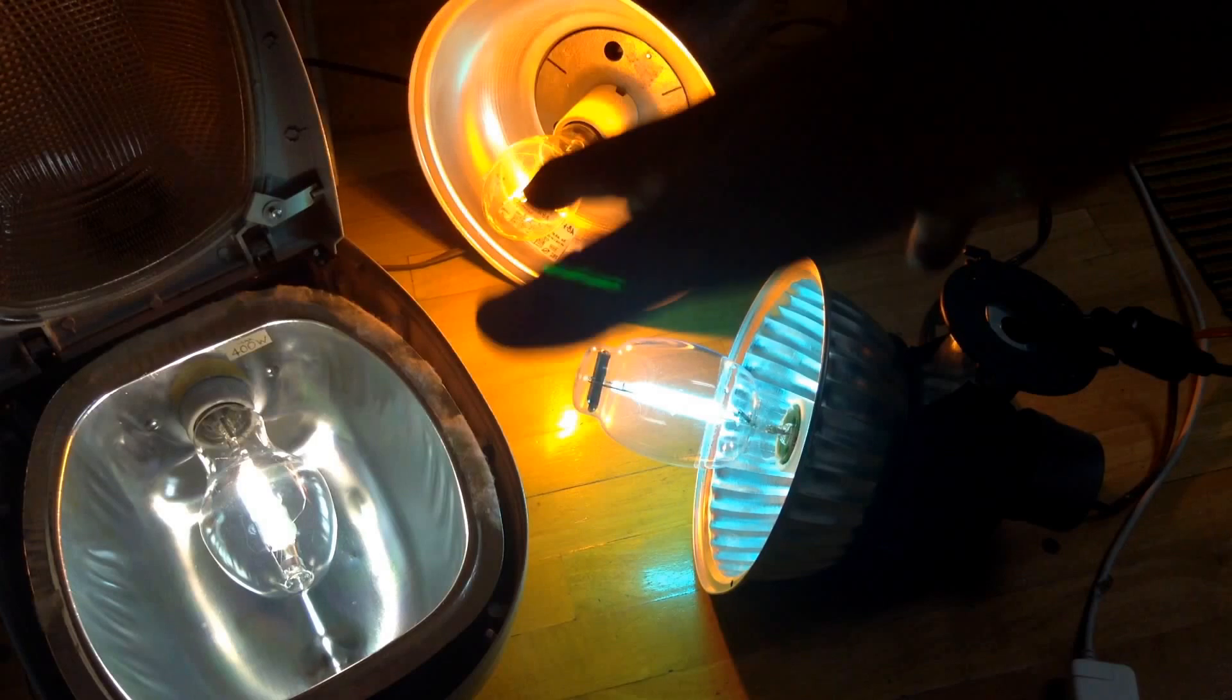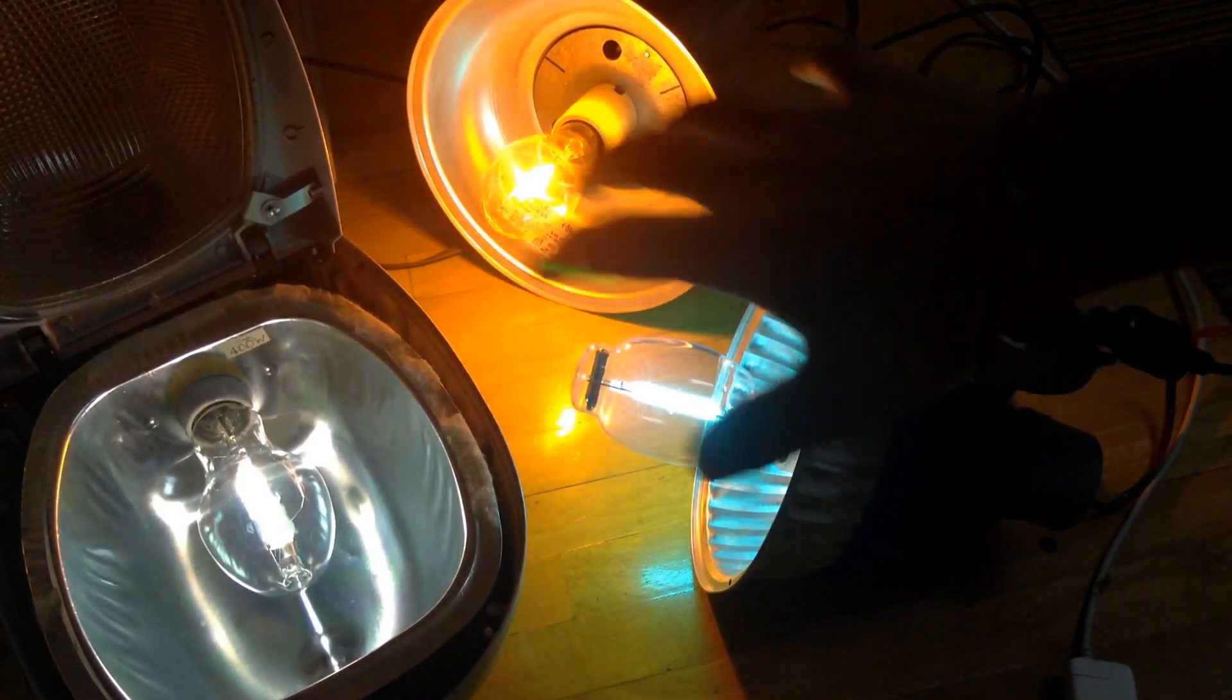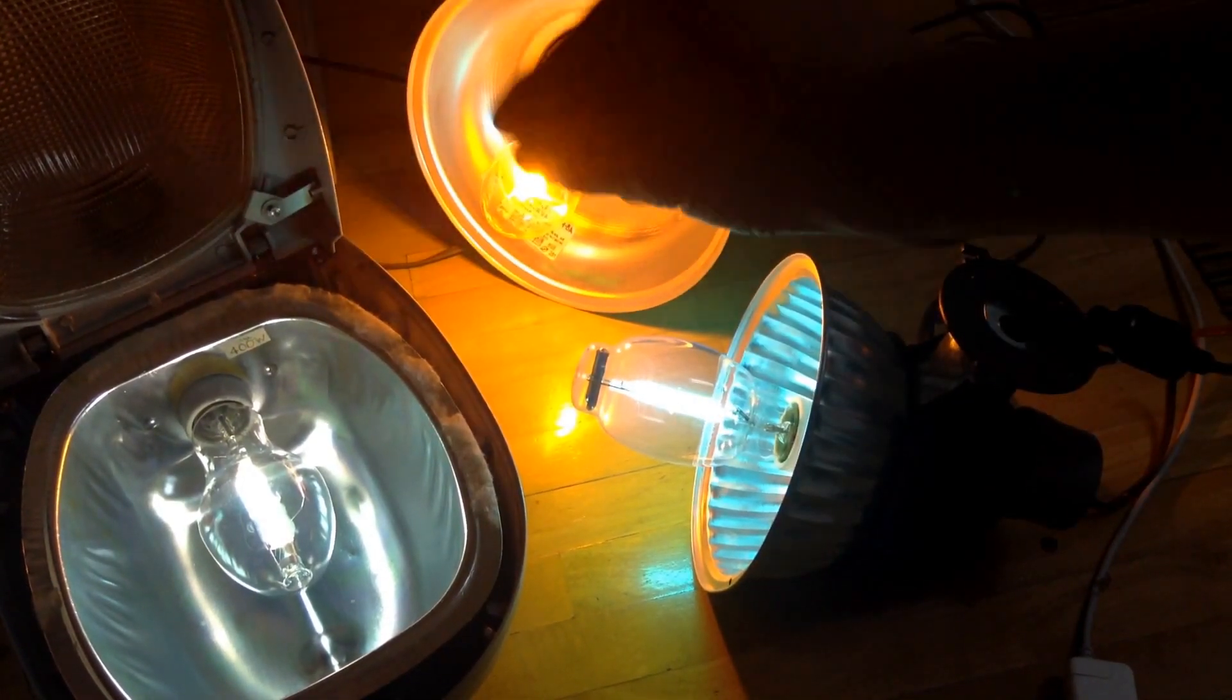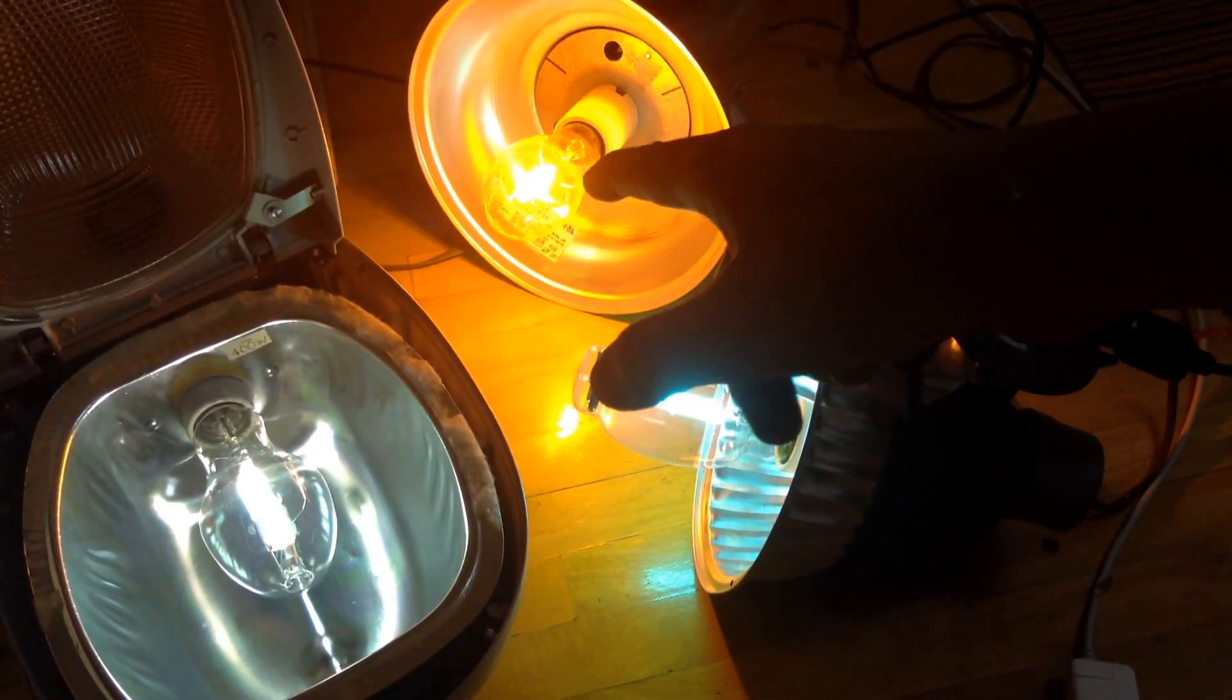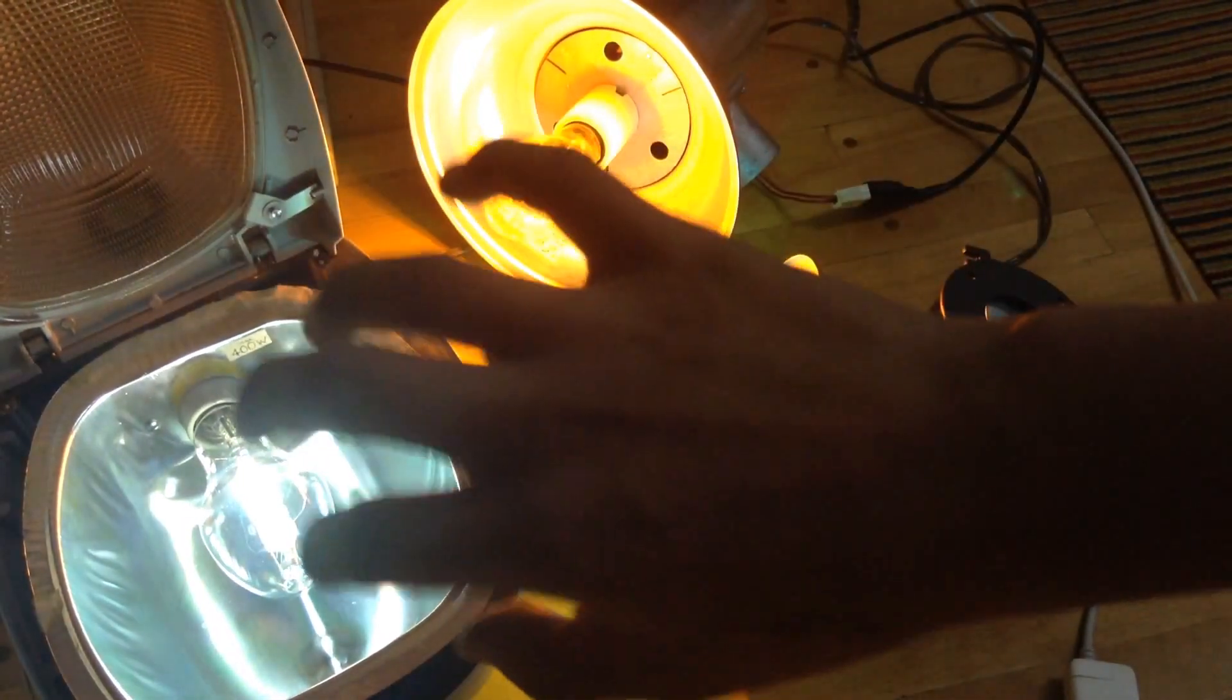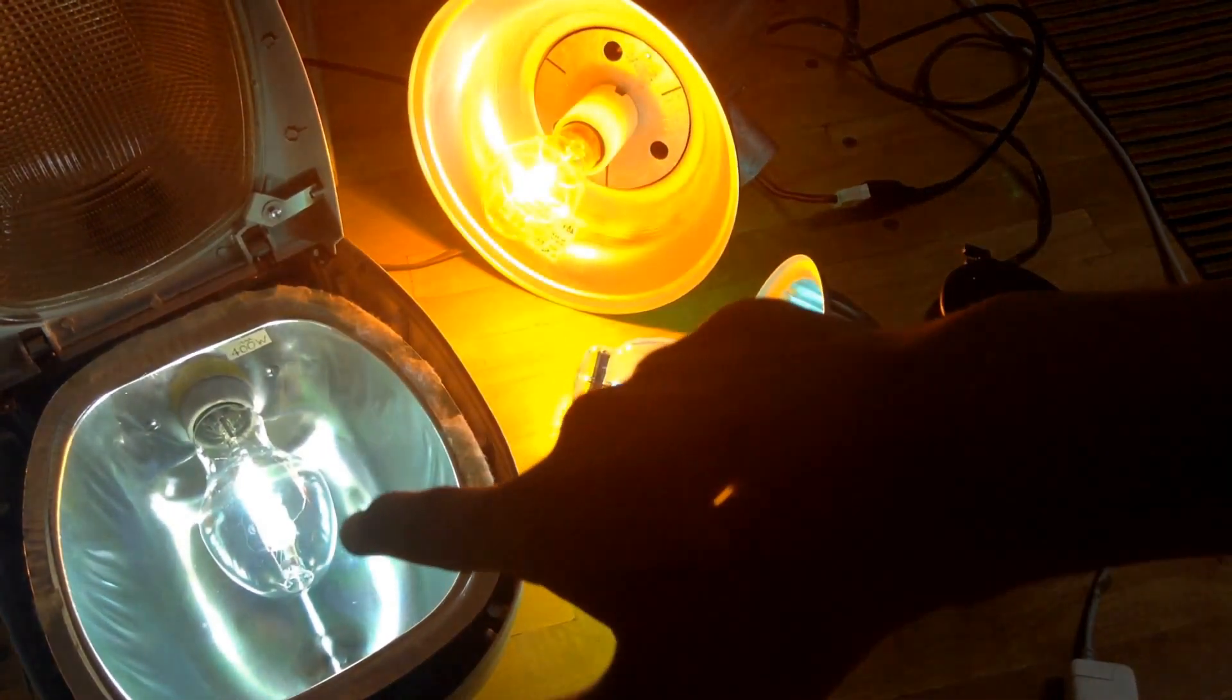Right here, we have the really green light of mercury vapor, really yellow of high-pressure sodium, and the whitish, greenish-whitish of metal halide.